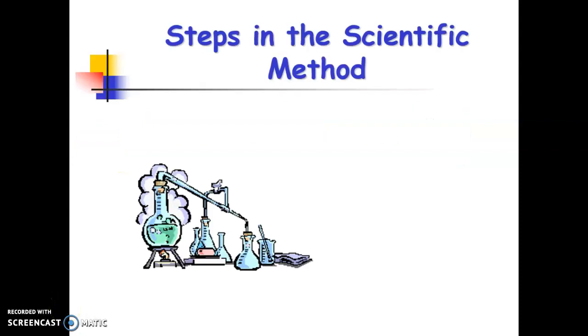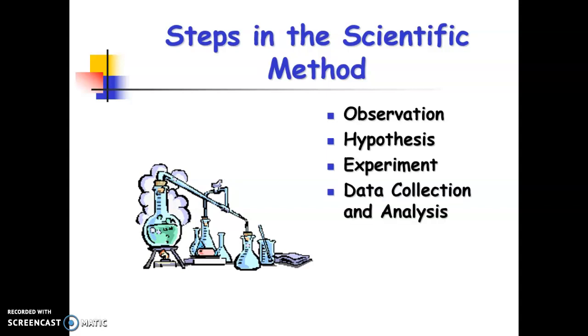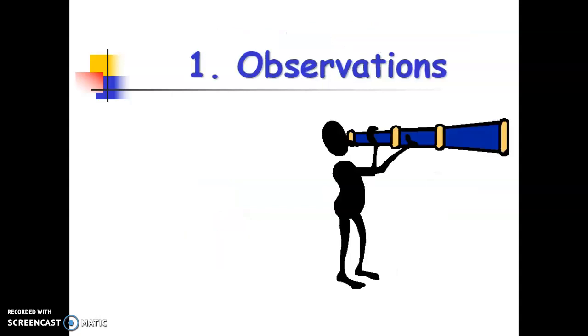So in the scientific method, we know there's a series of steps that we follow: an observation, forming our hypothesis, designing our experiment, collecting and analyzing our data, forming our conclusion, and then retesting. And we'll look at each of these steps individually.